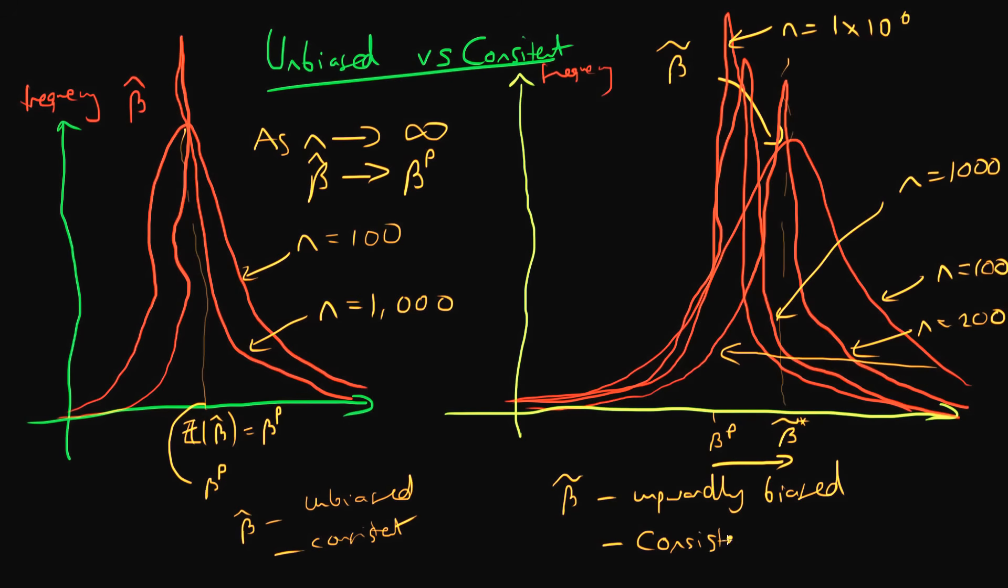We could postulate that our estimator beta tilde is in fact consistent. So as I increase my sample size arbitrarily, my estimator beta tilde is consistent. That means that beta tilde's output gets closer and closer to the population parameter.